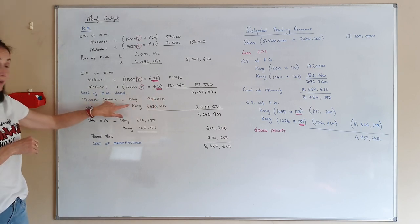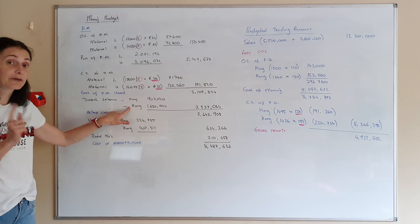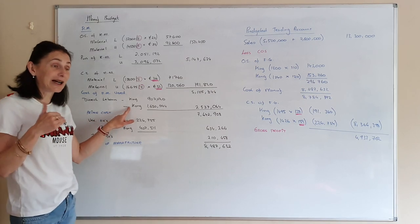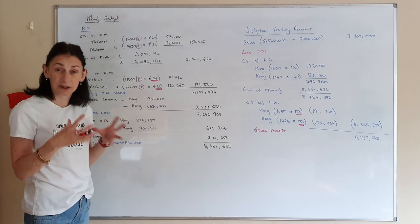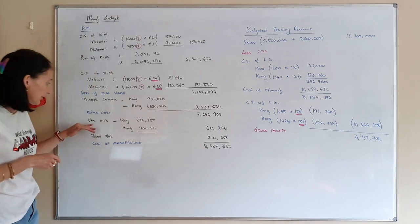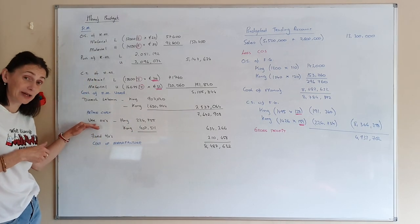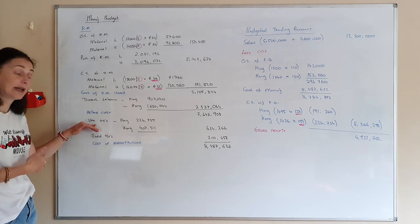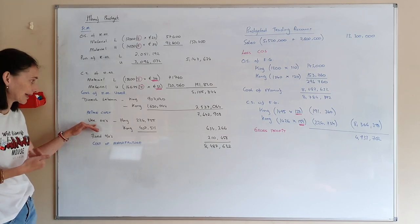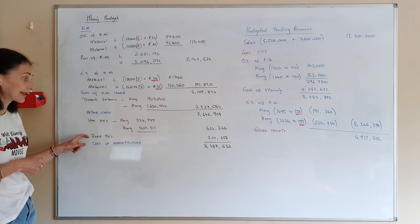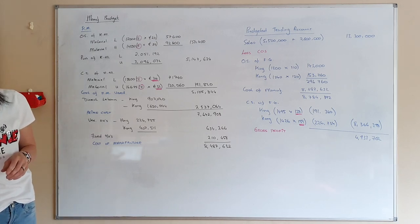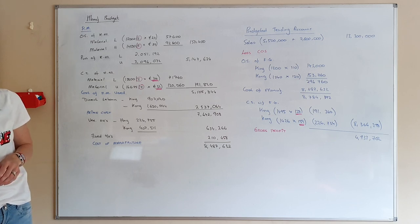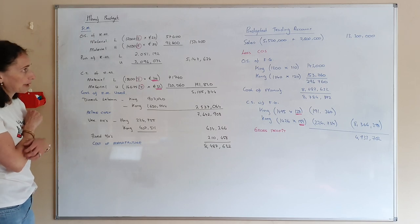Your direct labour - that came from your labour budget. Now, remember from the honours, they don't actually ask you to prepare that budget, but you need it for this. So it's going to be rough work for you. Your variable overheads as well - they don't ask you to prepare that budget, but you need it for this part of it. So it would be in your rough work or your workings. The fixed overheads - that figure is actually given to you. The fixed overheads is the very last figure given to you on page 561.